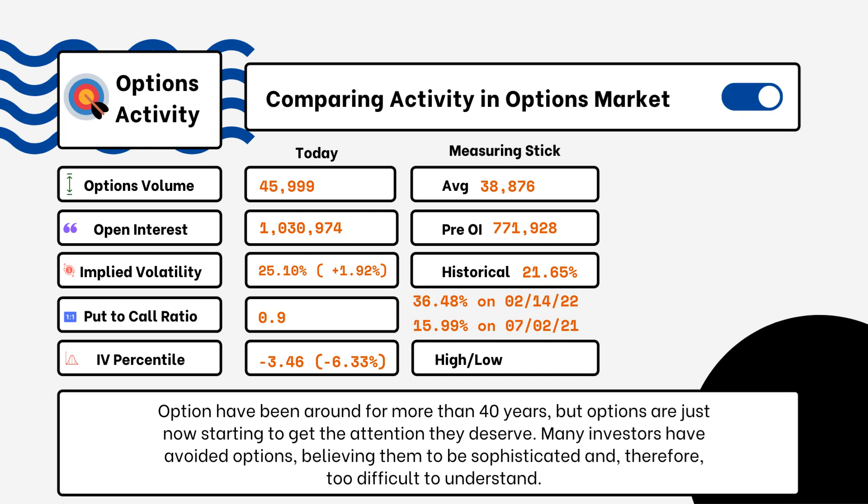What you'll be able to see here is options volume, open interest, implied volatility, put-to-call ratio, and IV percentile. One of the most popular indicators for traders is the put-to-call ratio. When we're looking at put-to-call ratios, if we see anything above one, that is telling us that there is more bearish sentiment in the market rather than bullish.